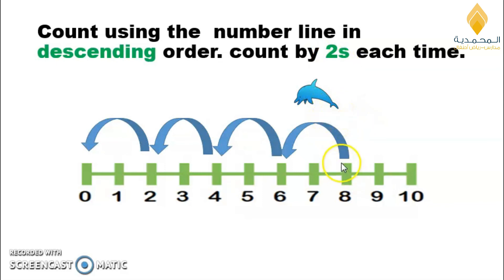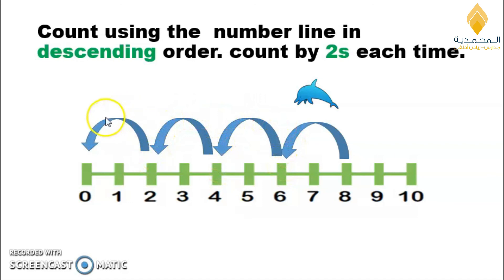This dolphin wants to start from eight, so in descending order: eight, six, four, two, zero. Let's count again: eight, six, four, two, zero.